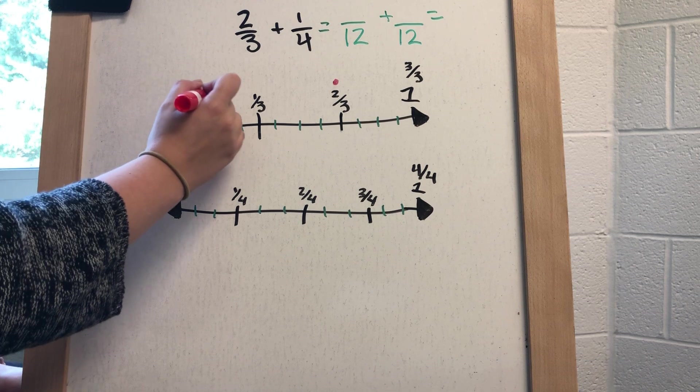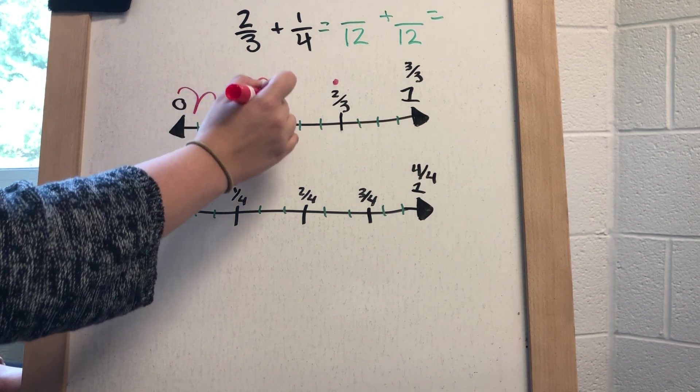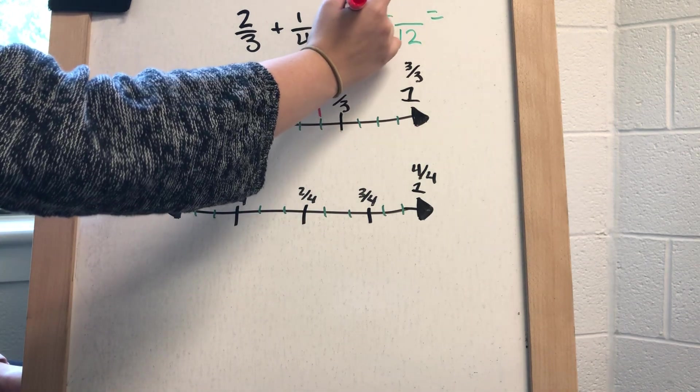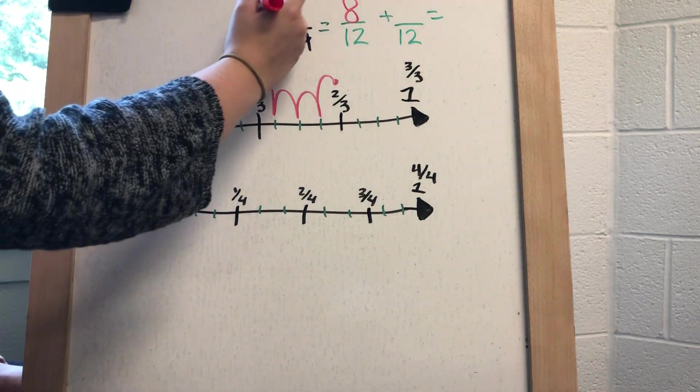We could look from 0 to two-thirds, how many twelfths did it take me to get to two-thirds. So it took me 1, 2, 3, 4, 5, 6, 7, 8 twelfths. So that's my new numerator for this fraction.